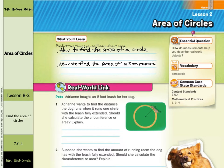So in our real world link, Adrienne bought an eight foot leash for her dog. Adrienne wants to find the distance the dog runs when it runs one circle with the leash fully extended. Should she calculate the circumference or the area? Well, if she's looking at the distance that this dog is running on the outside of the circle, that would be circumference.